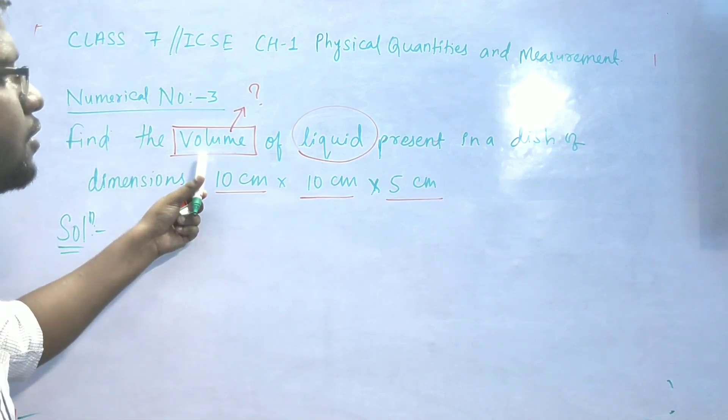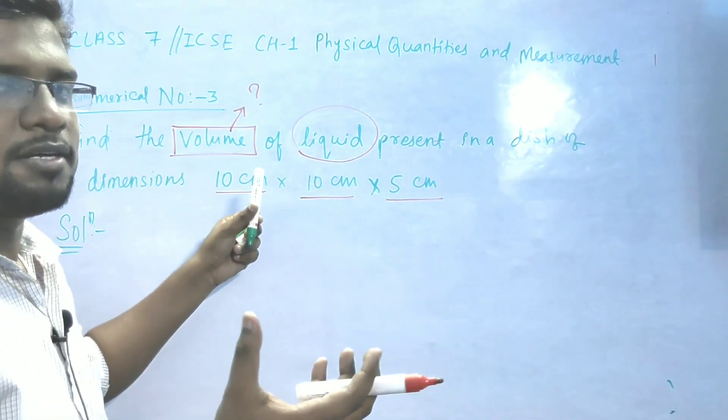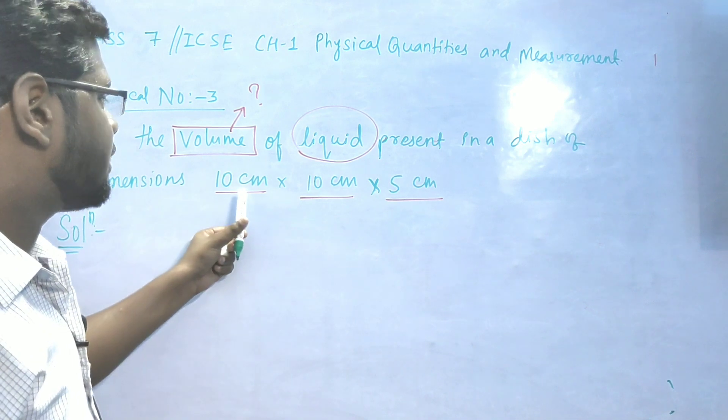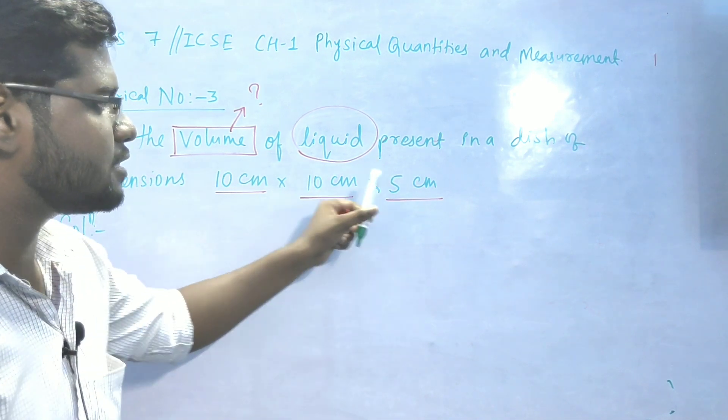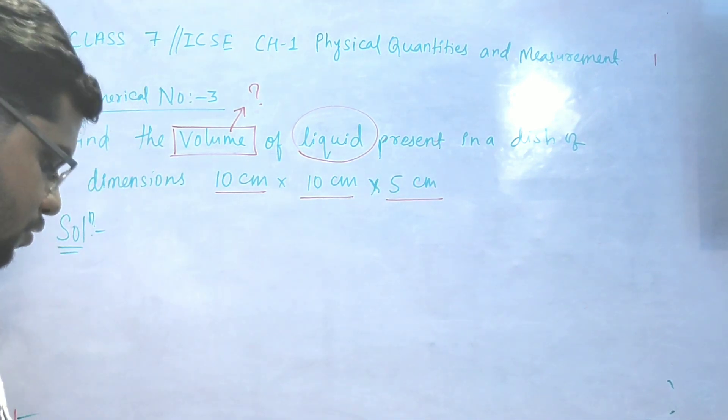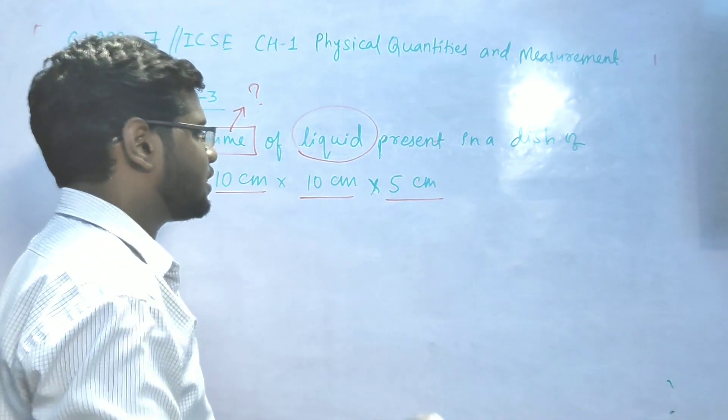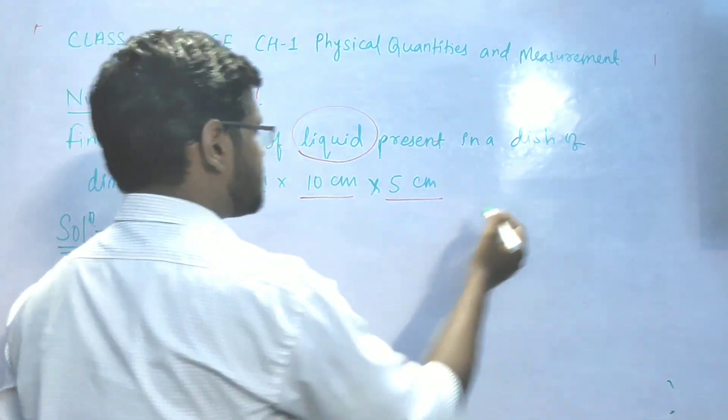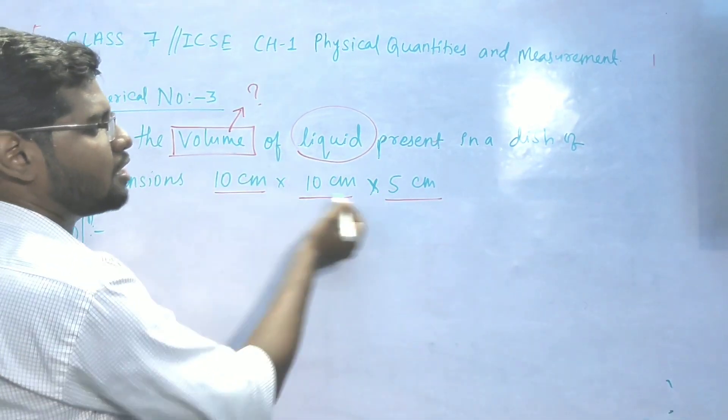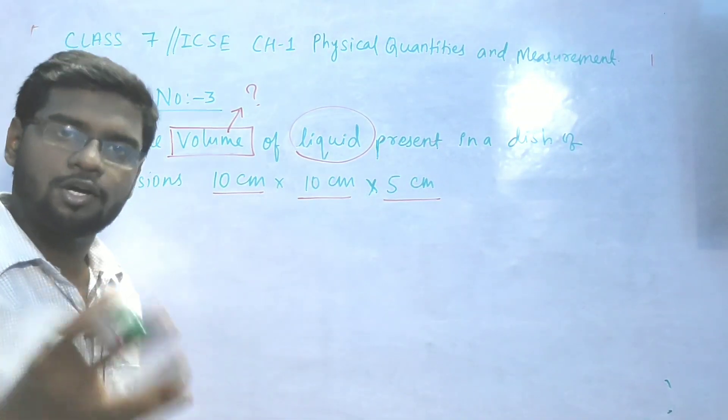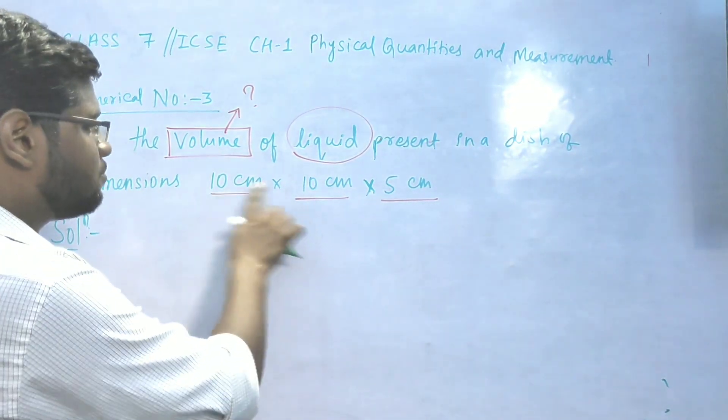So this volume, calculate the volume of liquid which we have to put in container, which we have to put in 10 cm, 10 cm and 5 cm. So let us draw the diagram. That means we have to understand the number.